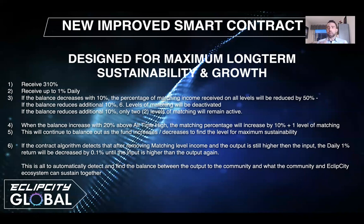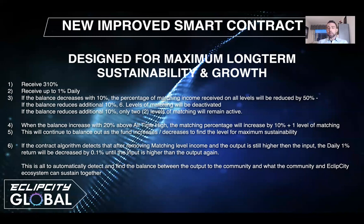This is designed to find the balance of what the community and Eclipse City ecosystem can sustain together. When the balance increases with more than 20% above all-time high — for example, if it was at 400, dropped to 360, and rises back to 440 — the matching percentage will increase by 10% and one level of matching will be added back. This continues to balance as the fund grows or shrinks to find maximum sustainability.